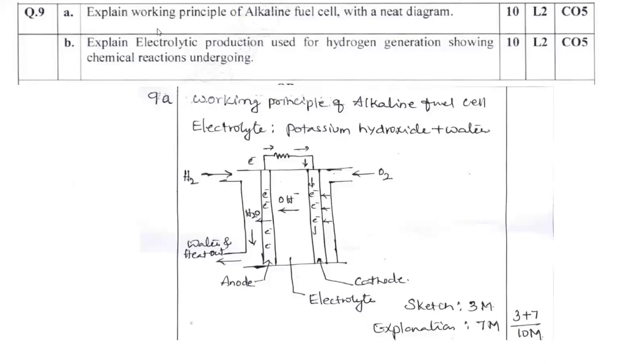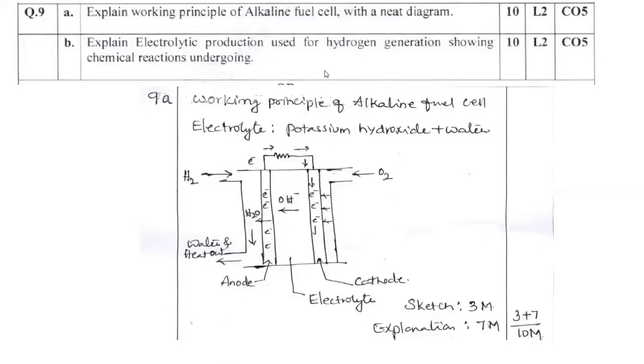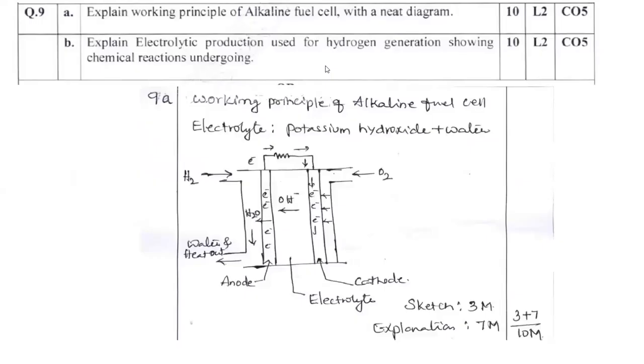Question number 9A. Explain the working principle of alkaline fuel cell with a neat diagram. So what you can do is you can elaborate in this fashion. You have to mention about anode, cathode, electrolyte, external load. You can mention working principle of alkaline fuel cell. Then like electrolyte, which is anode, which is cathode, which is electrolyte. What is exactly happening in electrolyte? What is the overall reaction? Everything you have to keep in your mind. This is most important question.